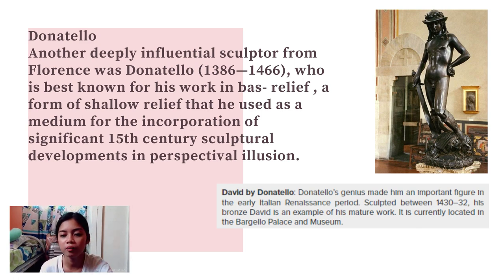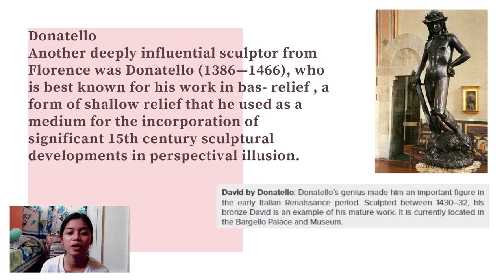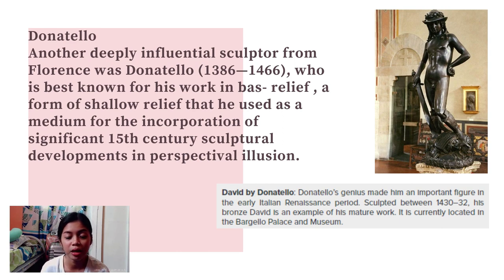Donatello created his bronze David for Cosimo's court in the Palazzo Medici. It was conceived entirely in the round and independent of any architectural surroundings — the known first freestanding nude statue produced since antiquity, representing an allegory of civic virtues overcoming brutality and ignorance. This sculpture was sculpted between 1430 to 1432 and is currently located in the Bargello Palace and Museum.